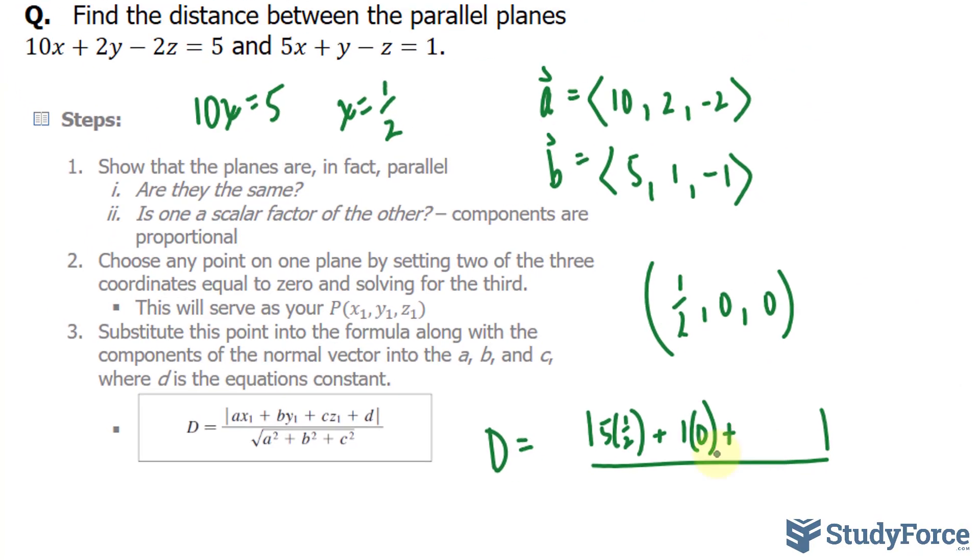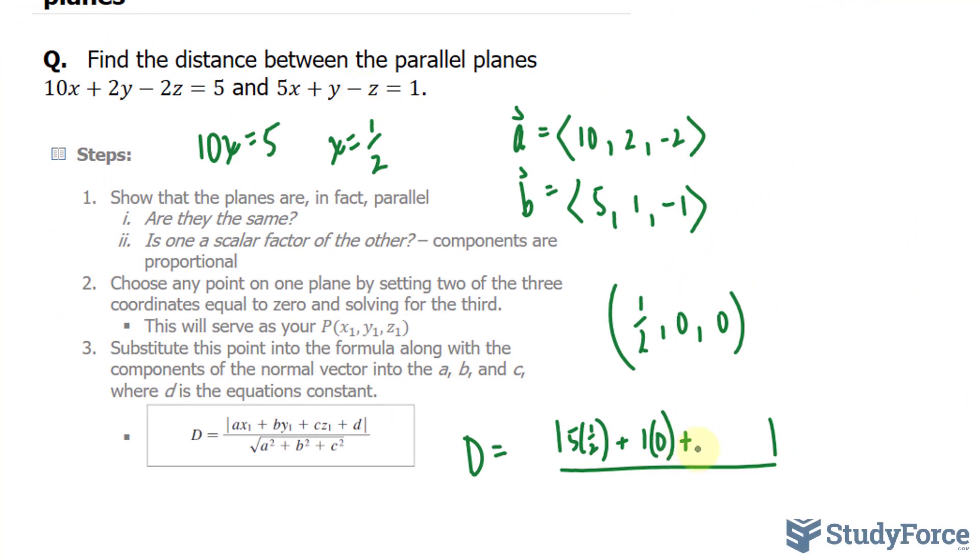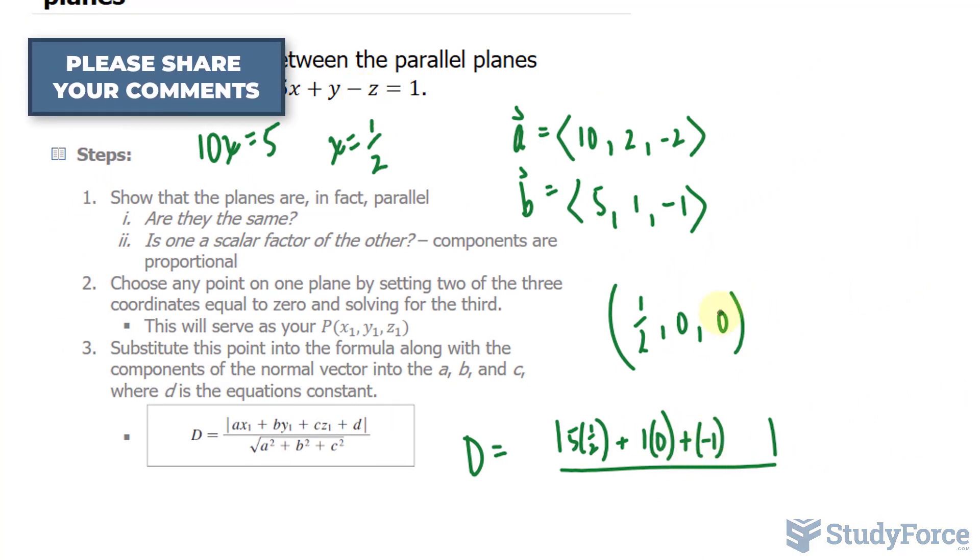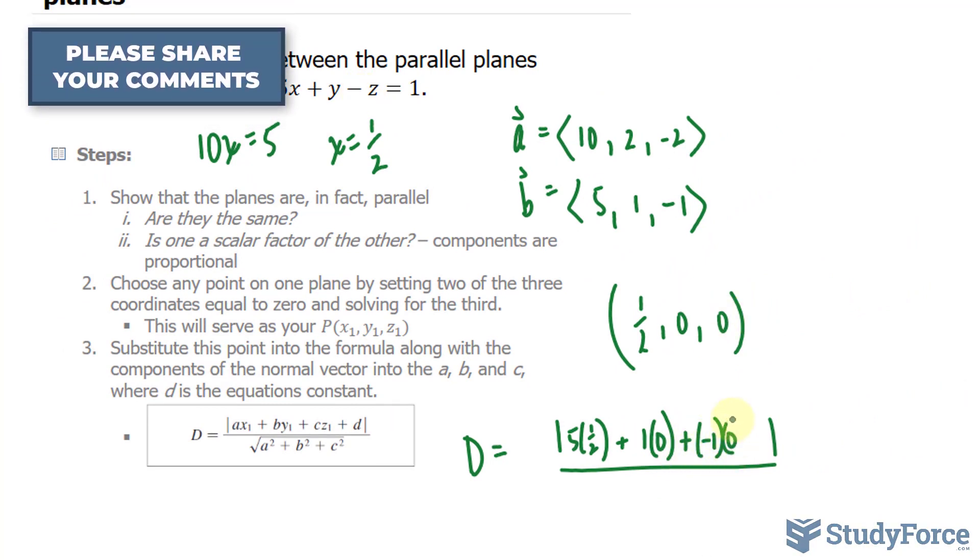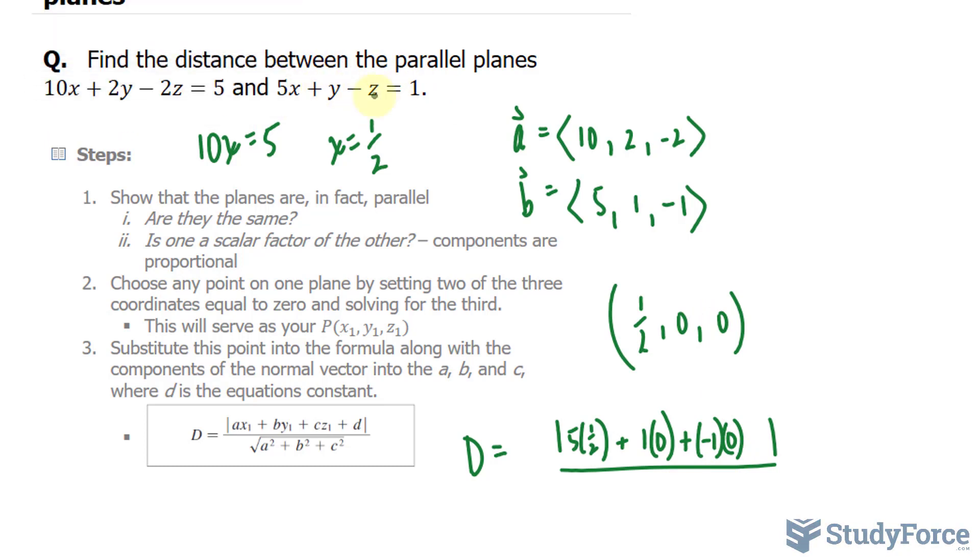Plus c, negative 1, times 0. And the d of this equation, you might think it's positive 1, but you want to bring all the terms to one side. You want to put it in general form. And if you do that, you end up with negative 1 as your d. So minus 1.